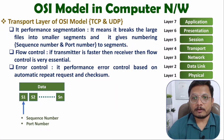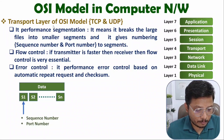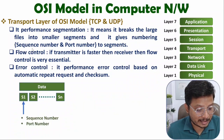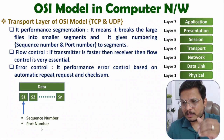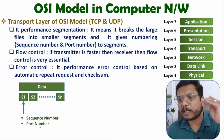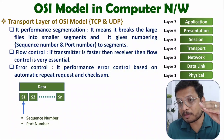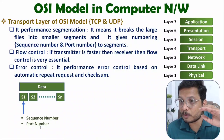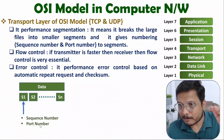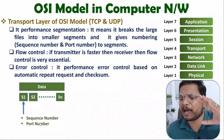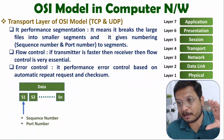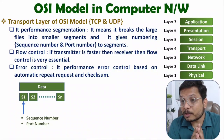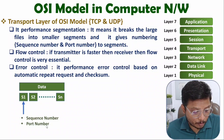At the transport layer, segmentation bisects data into segments and assigns sequence numbers and port numbers. Port numbers are associated with well-defined processes — if data belongs to video, the process for video has a well-defined port number; if audio, there is a well-defined port for that; and likewise for web browser data or any other data type.